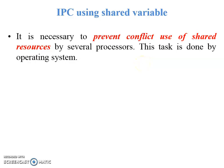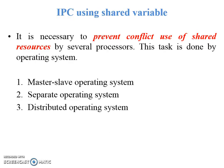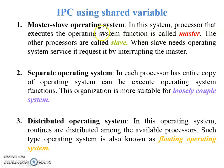Prevention is required because without it, one process will be stopped and errors are generated. There are three operating system types for this: first, master-slave operating system; second, separate operating system; and third, distributed operating system. In the master-slave OS, the processor that executes operating system functions is called the master, and the other processors are called slaves. When a slave needs OS service, it requests by interrupting the master.